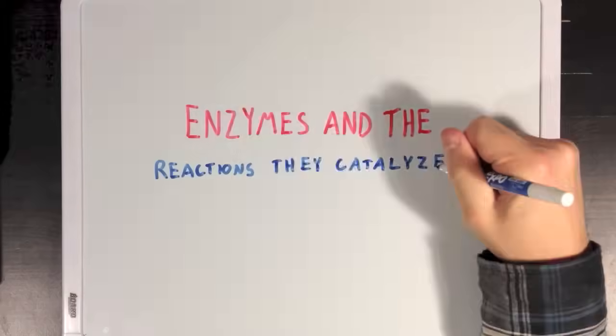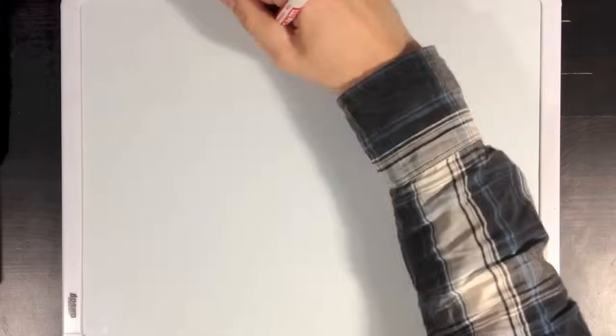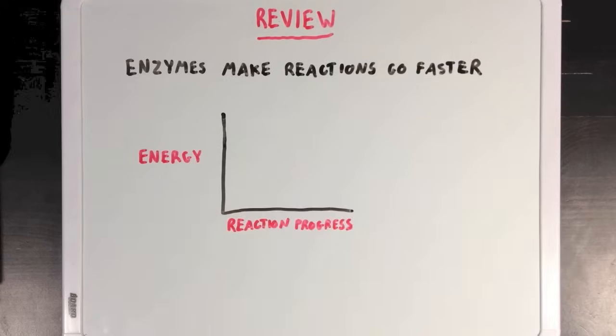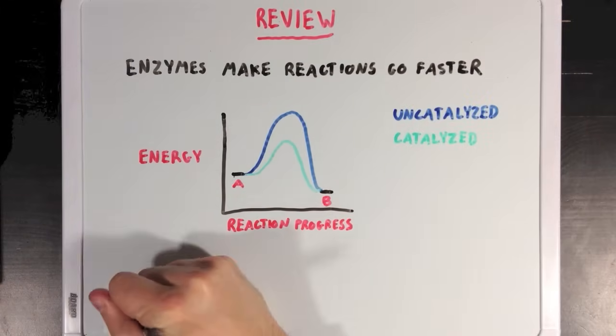So, today we're going to talk about enzymes and all the different kinds of reactions that enzymes can catalyze. But before we do that, let's review the idea that enzymes make biochemical reactions go faster. And if you look at a reaction coordinate diagram, you'd notice that enzymes speed up reactions by lowering their activation energy.